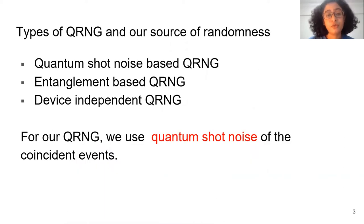Types of QRNG and our source of randomness. There are many approaches to build a QRNG. I have listed here some interesting approaches: quantum shot noise based QRNG, entanglement based QRNG, and device independent QRNG. For our work we have used quantum shot noise based QRNG from the coincident events.